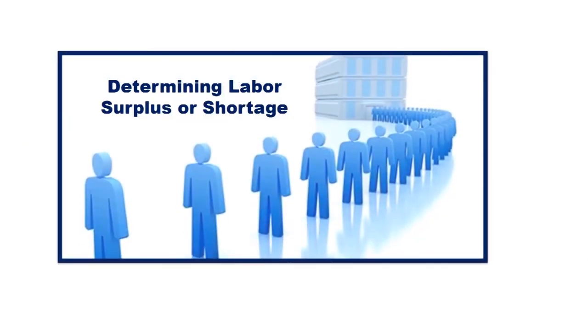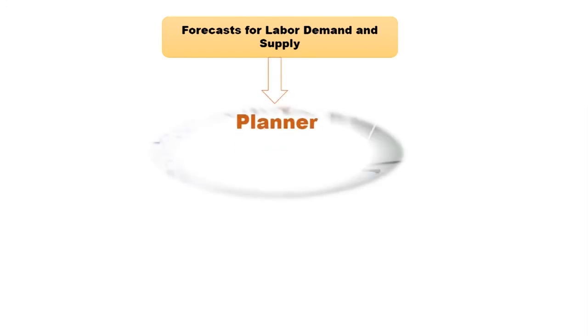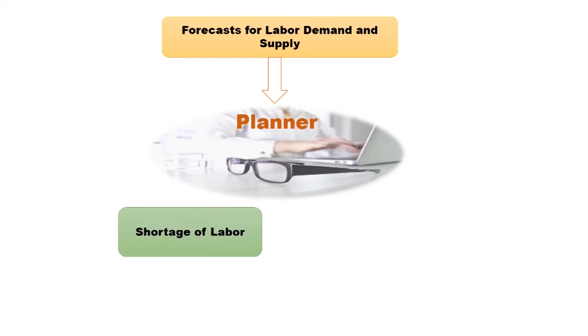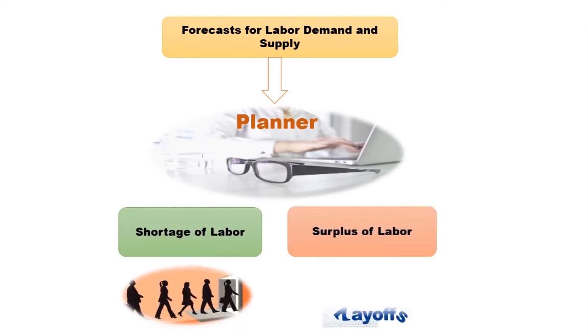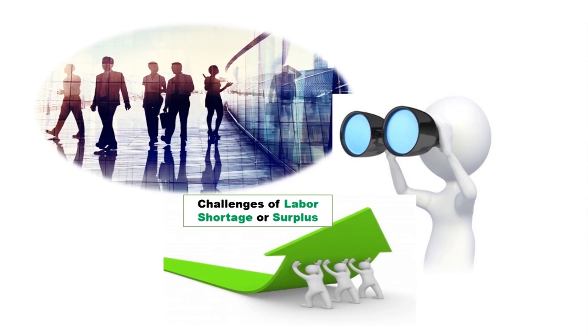Based on the forecast for labour demand and supply, the planner can compare the figures to determine whether there will be a shortage or surplus of labour for each category. Determining expected shortages and surpluses allows the organisation to plan how to address these challenges. So in this video, we discussed the first step of the HRP process, that is forecasting.